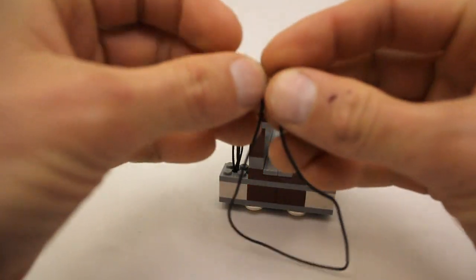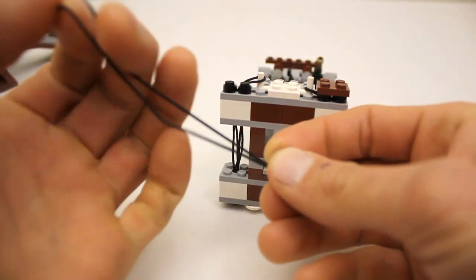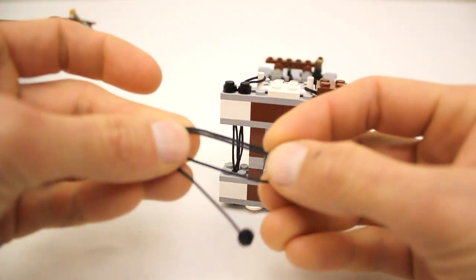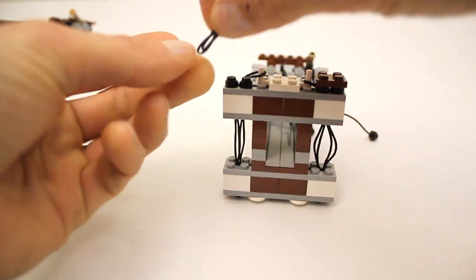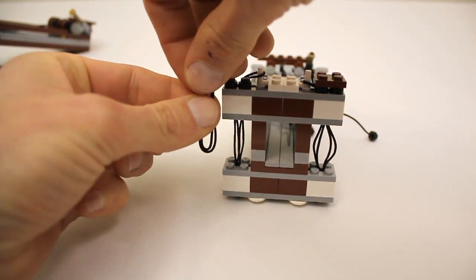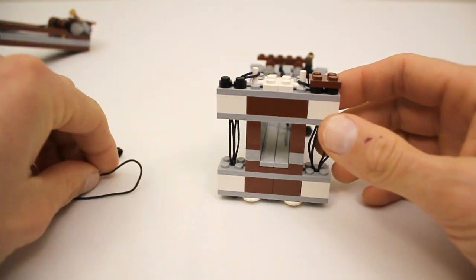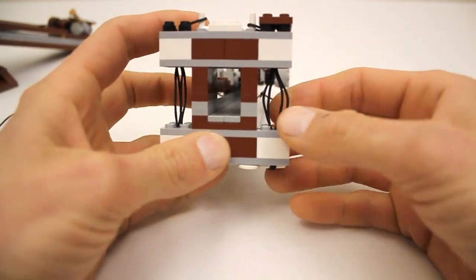Basically, you just take one of these strings, fold it in half, and then again. And then feed that in through the top of the frame, like so. They're actually quite loose until you tension them up.